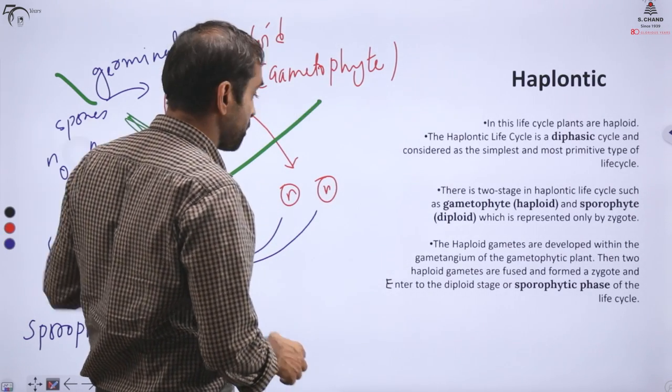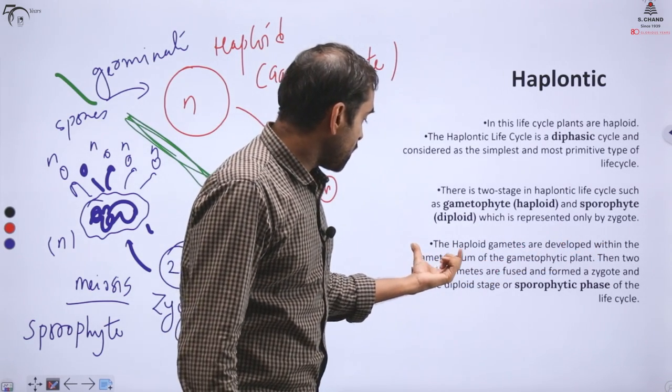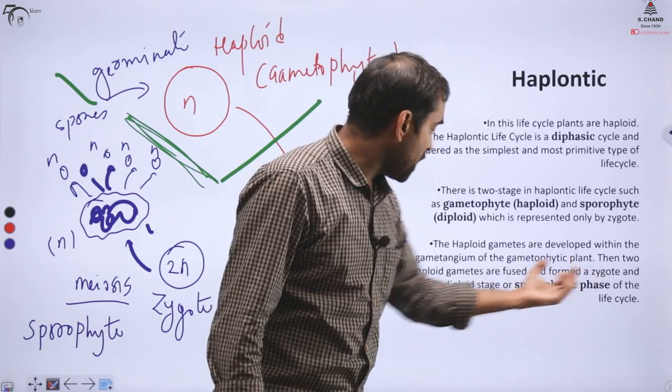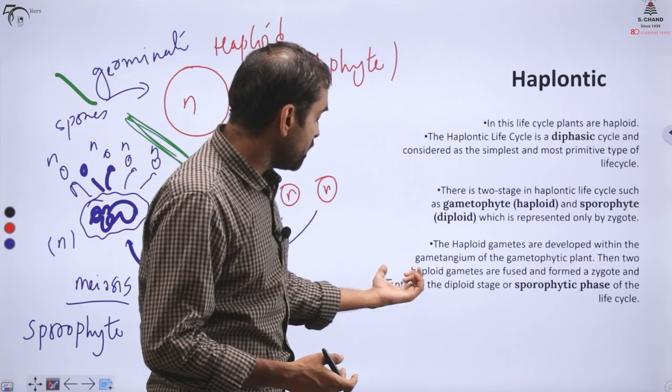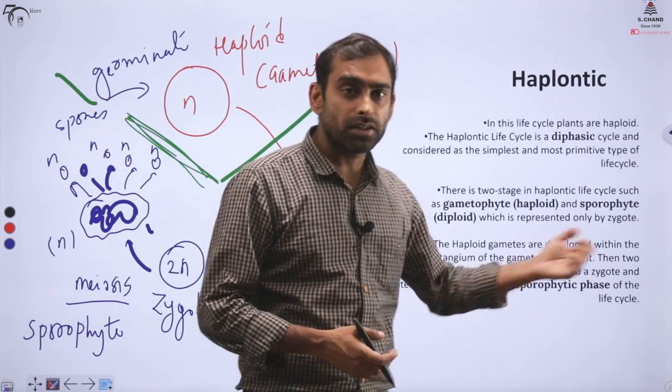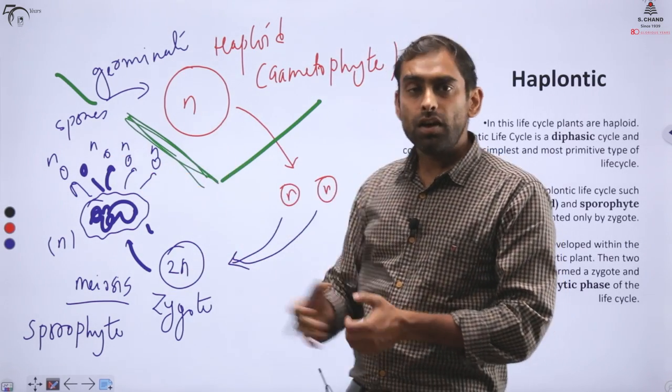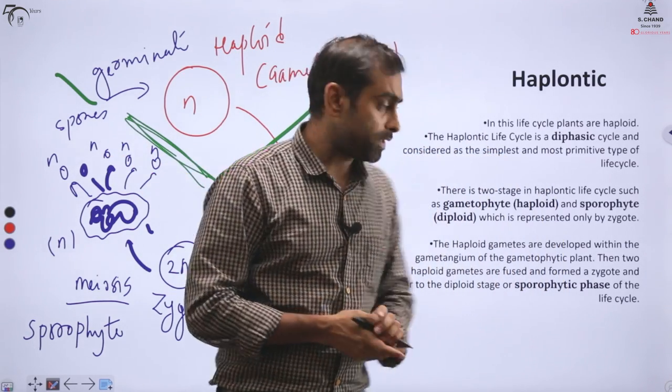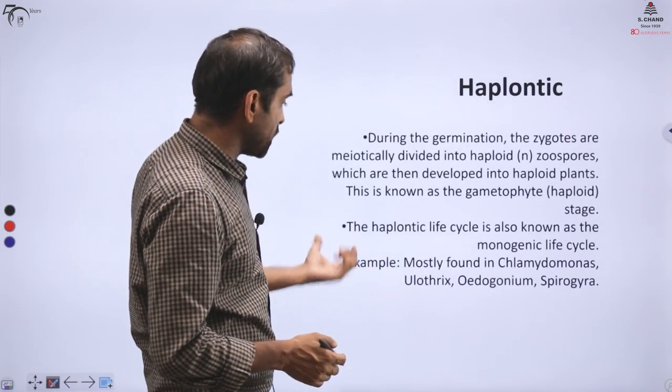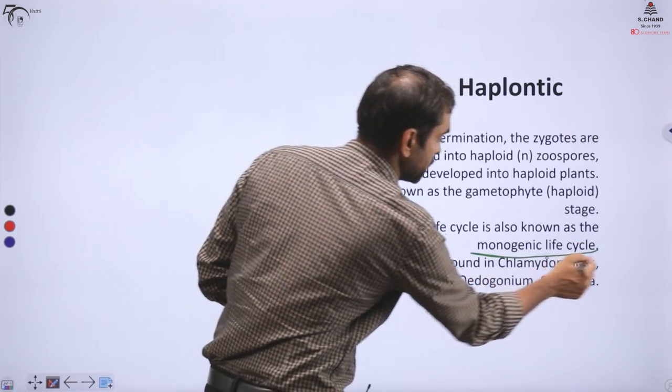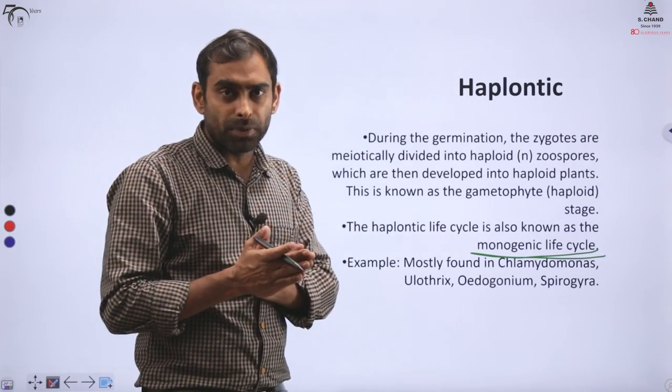Which organisms have haplontic life cycle? Haploid gametes develop within gametangium in the gametophytic plant. Then two haploid gametes fuse to form a zygote. They enter diploid state, then comes the sporophytic phase of the life cycle, which is basically the zygote. It produces spores which eventually give rise to a new plant. Looking at specific examples, haplontic life cycle is also called monogenic life cycle because only one type of organism exists.